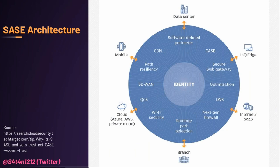SASE also helps increase performance: with cloud infrastructure you can easily connect to wherever resources are located, and access to applications, internet, and corporate data is available globally. Zero trust is built into the SASE model — a zero trust approach removes trust assumptions when users, devices, or applications connect; a SASE solution will provide complete session protection regardless of whether a user is on or off the corporate network. With full content inspection integrated into a SASE solution, you benefit from more security and visibility. Implementing data protection policies within a SASE framework helps prevent unauthorized access and abuse of sensitive data.